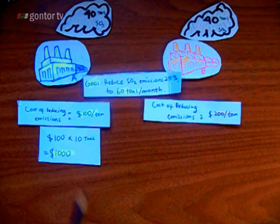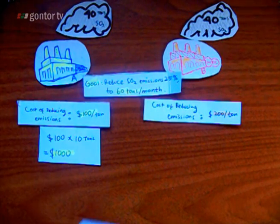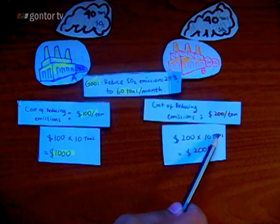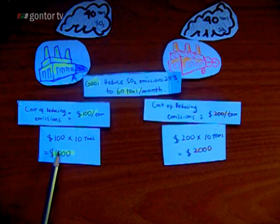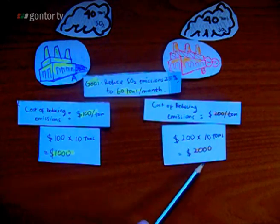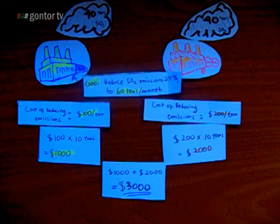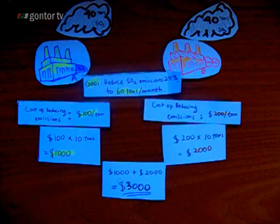For Firm A, they need $1,000 to achieve the goal of reducing emissions by 10 tons. Meanwhile, for Company B, they need $2,000 because the cost is $200 per ton for 10 tons. So Company A needs $1,000 and Company B needs $2,000, meaning overall both firms together will cost $3,000 to achieve the goal of reducing sulfur dioxide emissions by 25% to 60 tons per month. That's the situation before pollution permits — now let's see what happens with pollution permits.